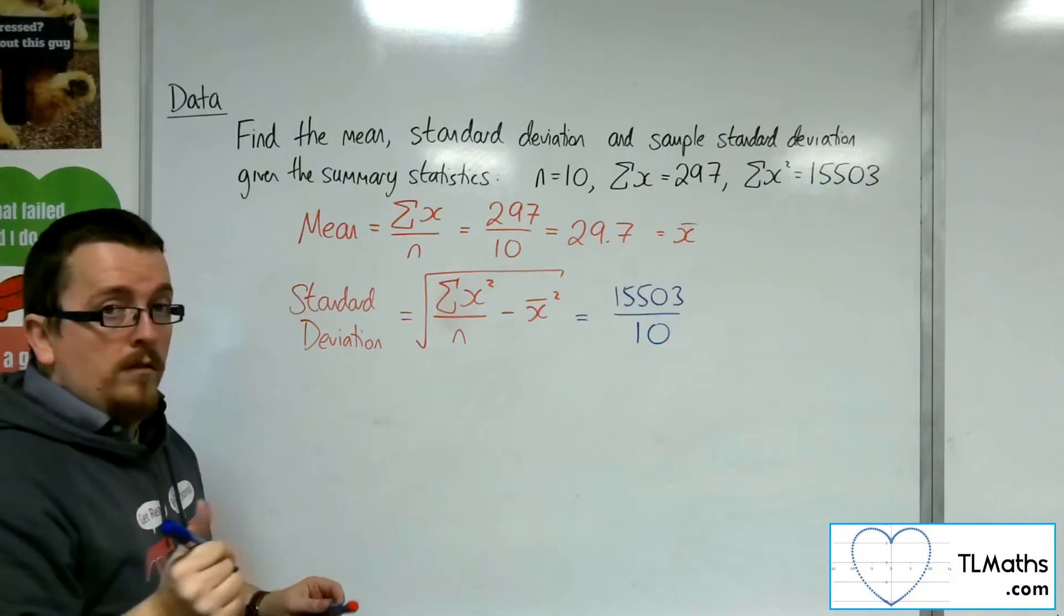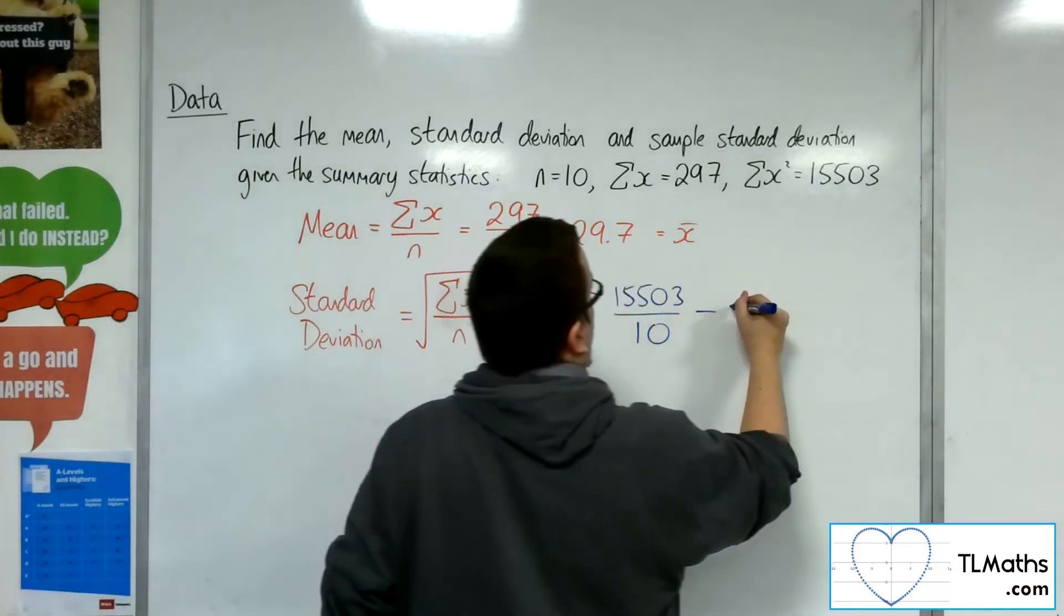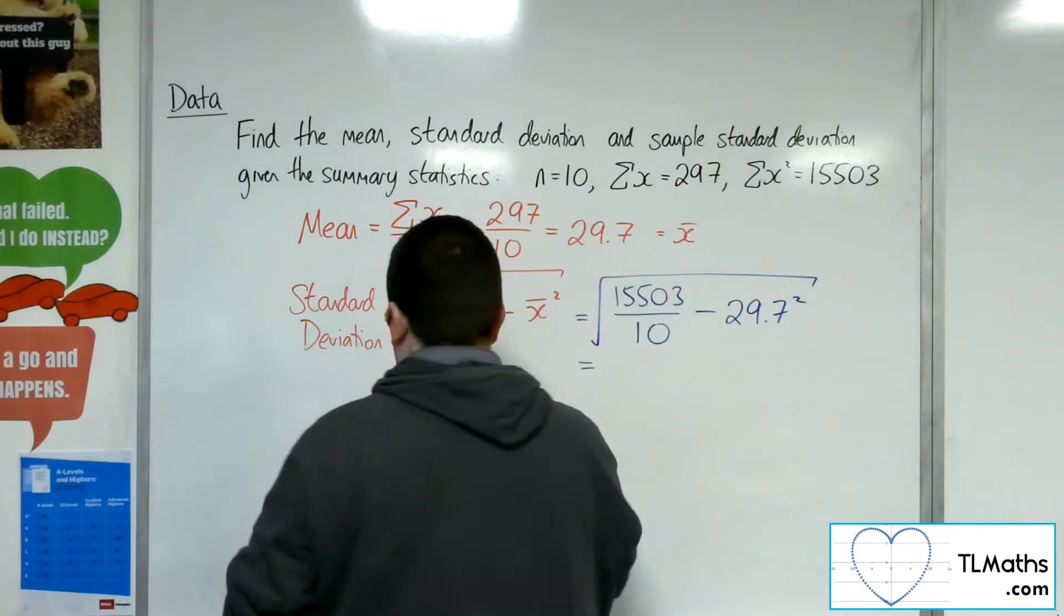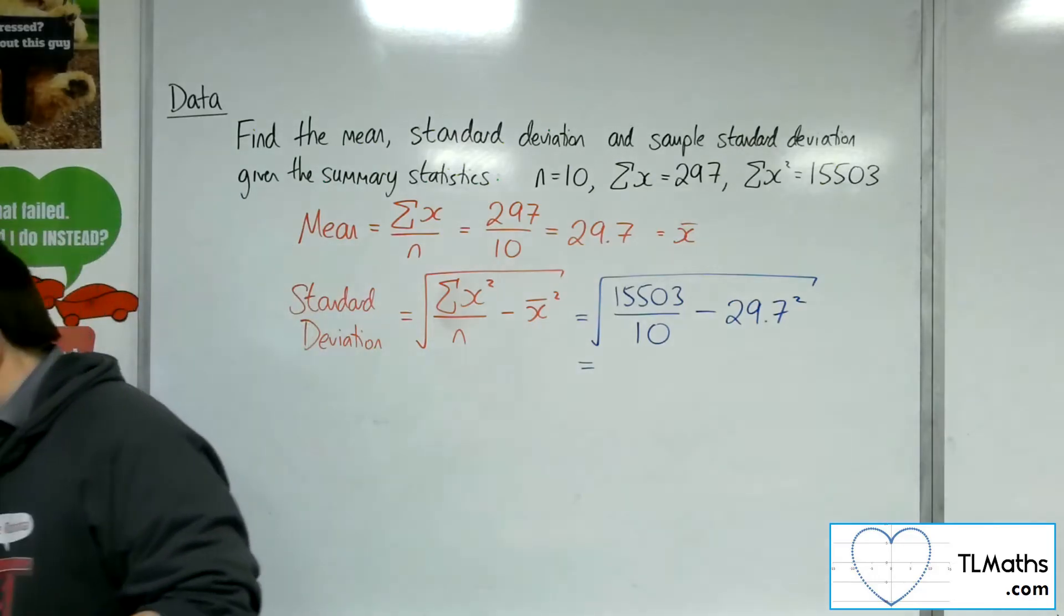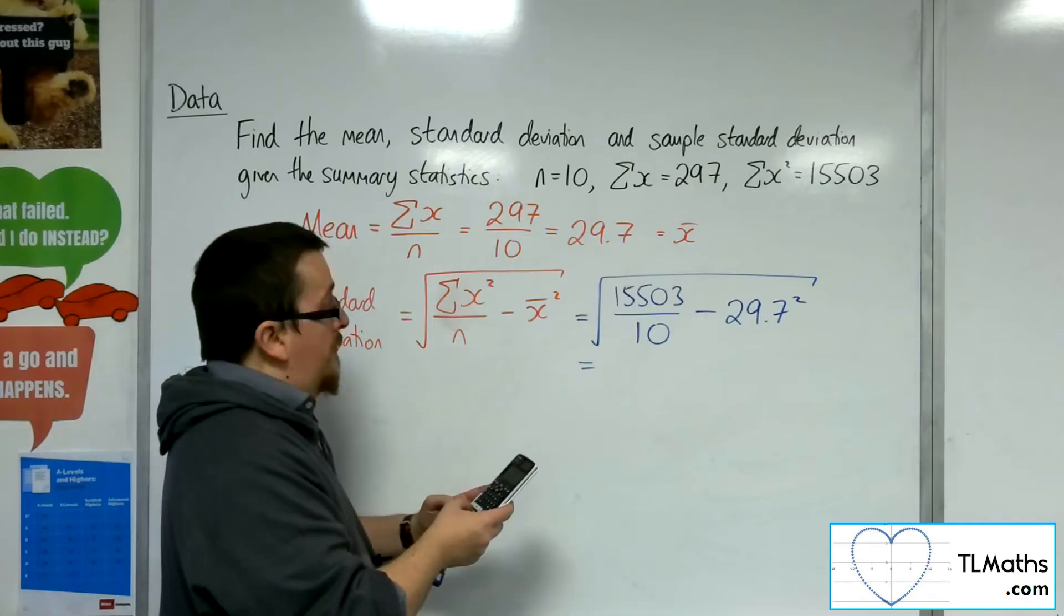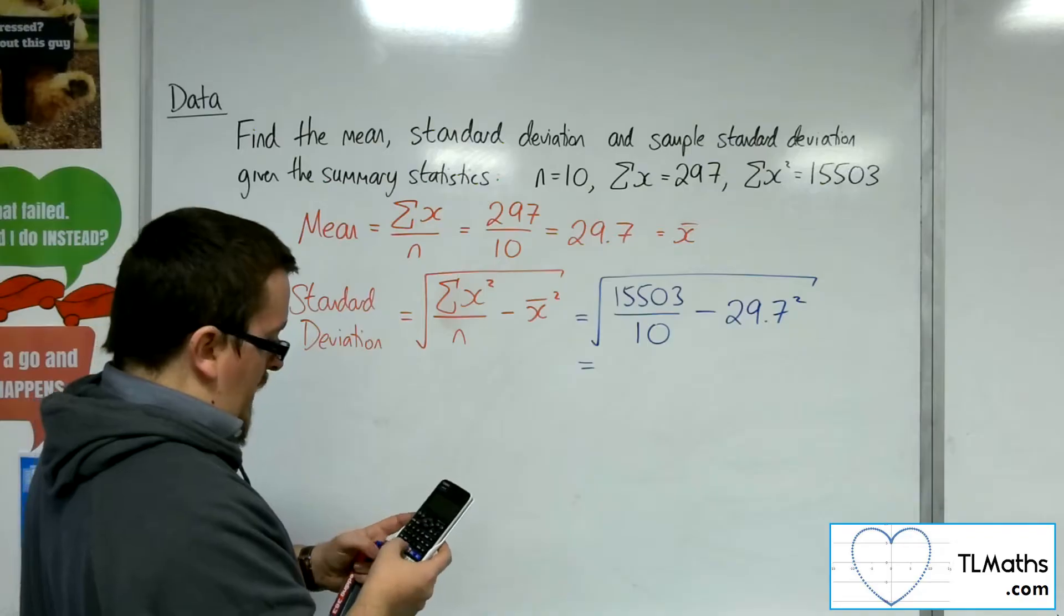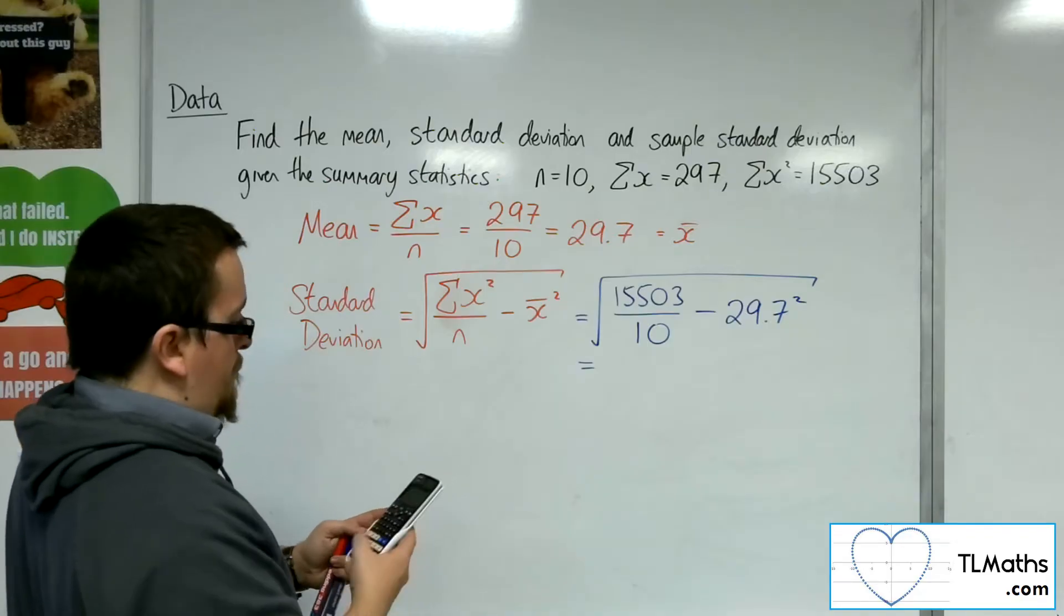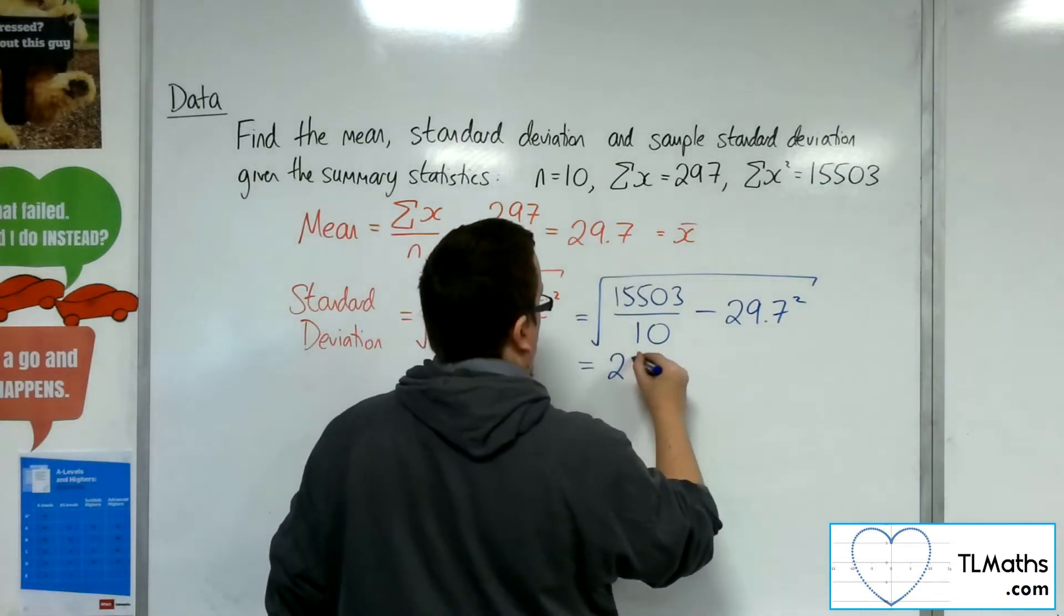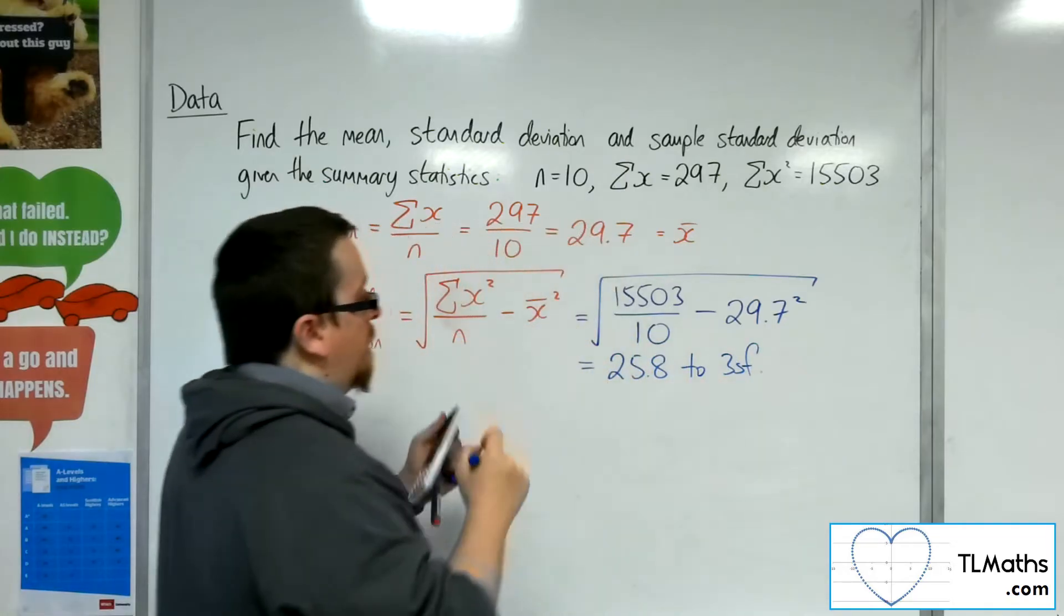So 29.7 squared, and then square root. So we want to pop that into our calculator. Square root of 15503 divided by 10, take away 29.7 squared. So that gets us 25.8 to 3 sig fig.